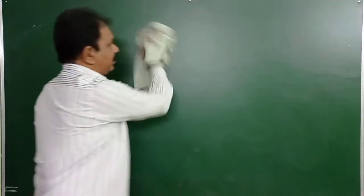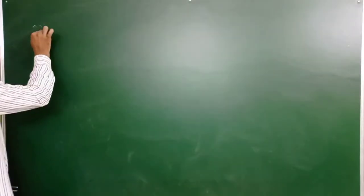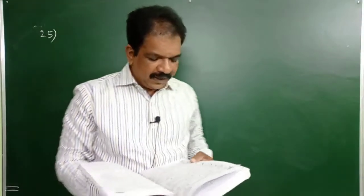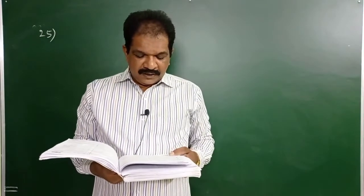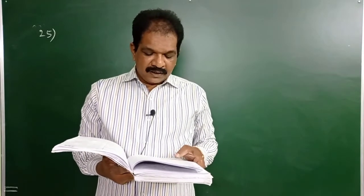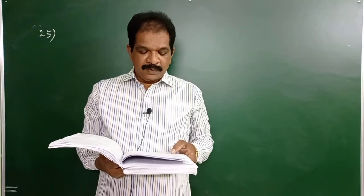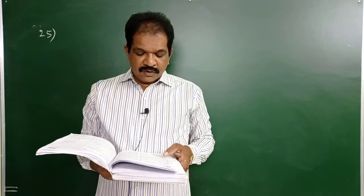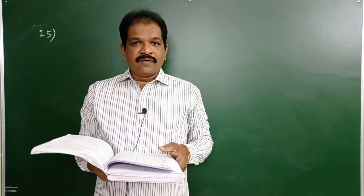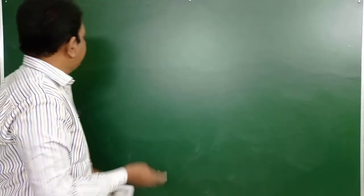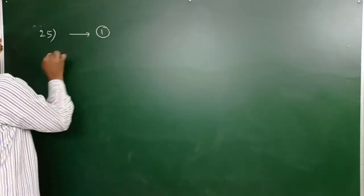Question 25: Element X decays to element Z by a two-step process: X→Y by emitting an alpha particle, then Y→Z by emitting 2 beta particles. With 1 alpha and 2 beta particles, X and Z will be isotopes — same as the model discussed in question 20. Answer for question 25 is 1st option.